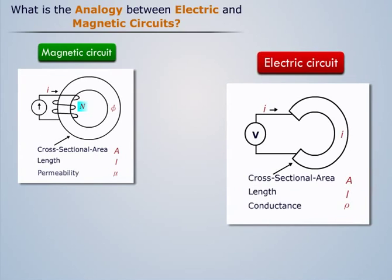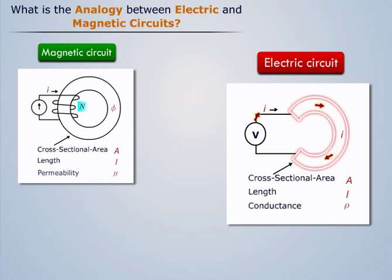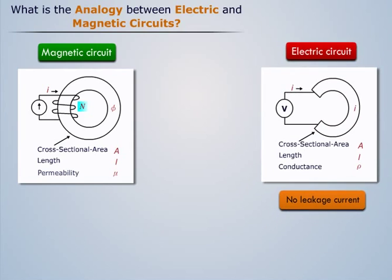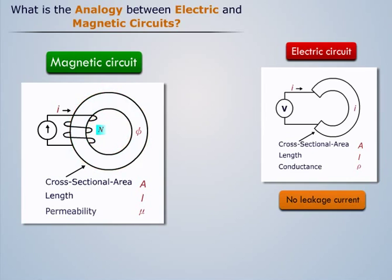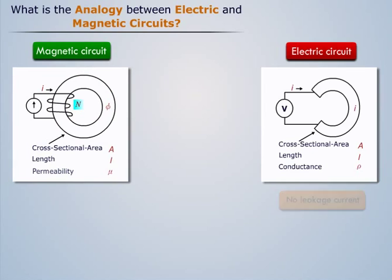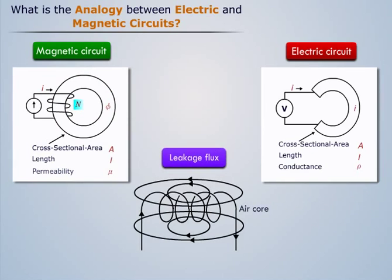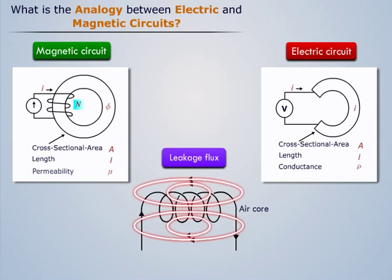In typical electric circuits, current is confined to the circuit with very little leakage. But in typical magnetic circuits, all the magnetic field is not confined to the magnetic circuit. There is significant leakage flux in the space outside the magnetic core, which should be taken into account.